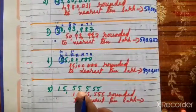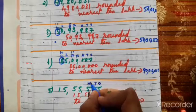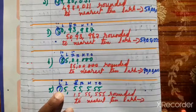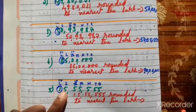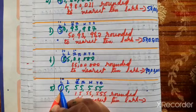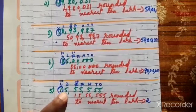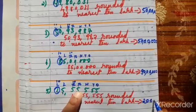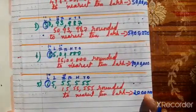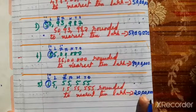Now 5th question: 15,55,555. We have to round off nearest to 10 lakhs. First step, check the place value: ones, tens, hundreds, thousands, ten-thousands, lakhs, and 10 lakhs — 1 is in the 10 lakhs place. Knock the door to the next number: it's 5. Do you have 5 rupees or more? Yes — 5 can help, so 1 is added. 1 becomes 2. Once the door is knocked, all following digits — 5, 5, 5, 5, 5 — become 0. So 15,55,555 rounded to nearest 10 lakh is 20 lakhs.